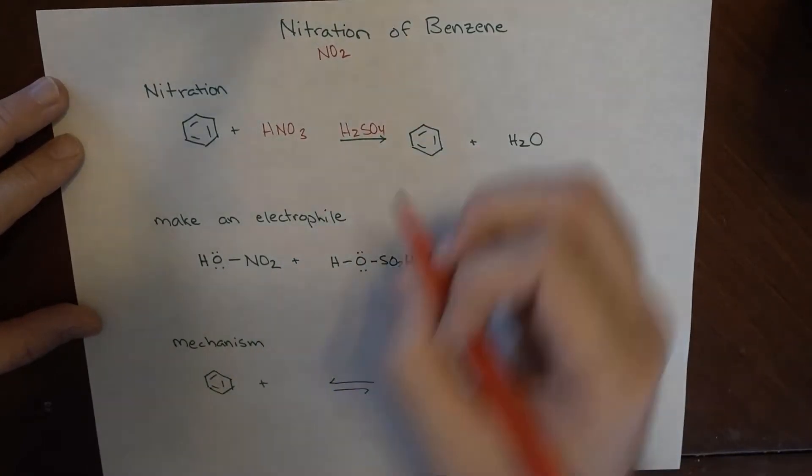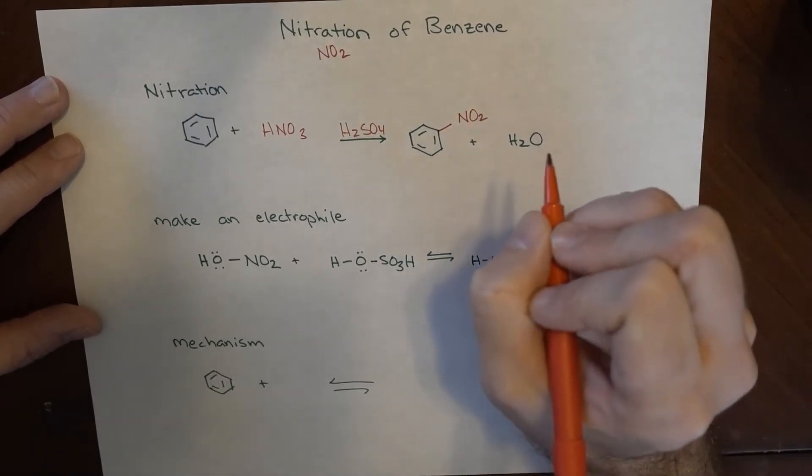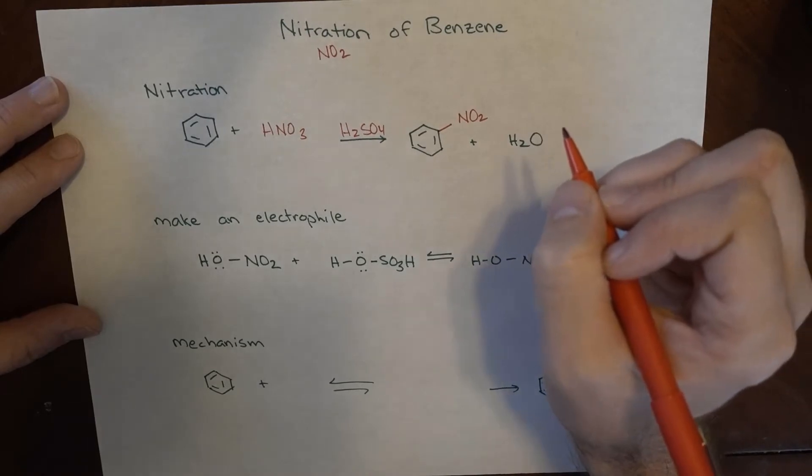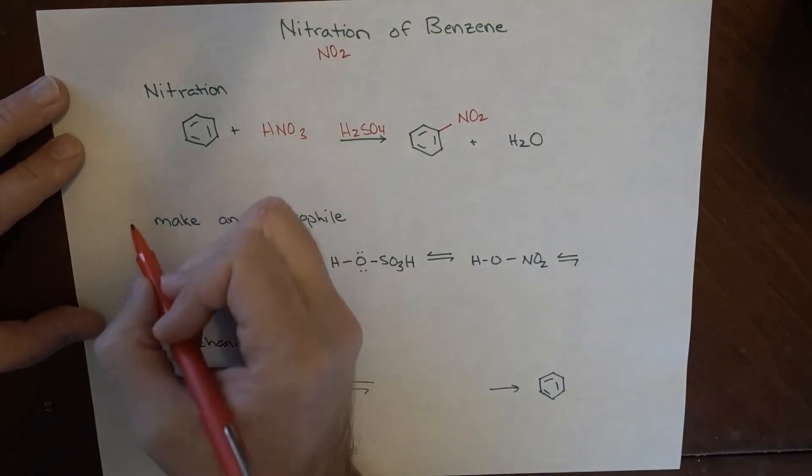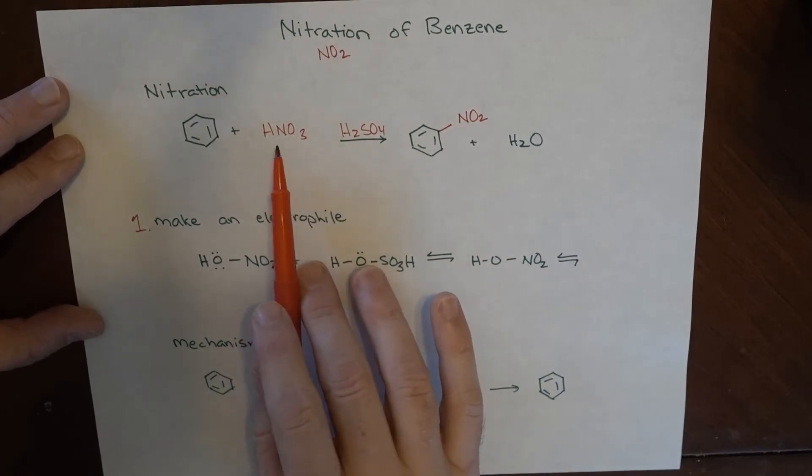We need those two things, and when we've done this we've added NO2 and then we have water left over as a byproduct. The first step in this is to make an electrophile. This doesn't happen on its own. This actually needs to undergo a change.